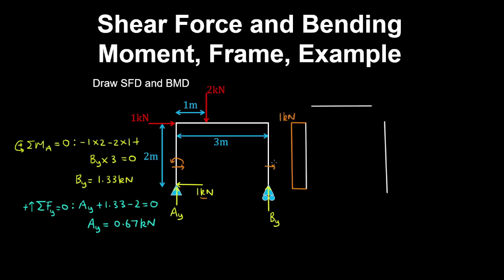And if we cut the right column, we can see there's no horizontal reaction, so the shear force is 0 in this column. Now for the left column, we had a reaction of Ay, which was 0.67kN.